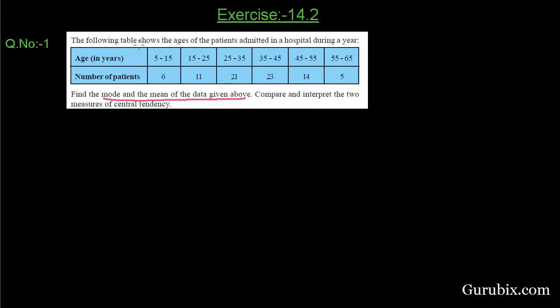The data is given in this table. In this table, there are two rows. First row is age in years and second row is number of persons, which is our fi. In first row, age is given in the form of class interval, which has class size of 10.